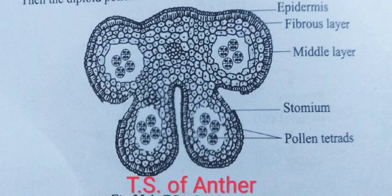This is all about the structure of anther. First, I mentioned that anther is the male sex organ. The transverse section of anther shows epidermis, endothecium, middle layer, tapetum, and sporogenous tissue, that is microspores. This is all about the structure of anther. Thank you.